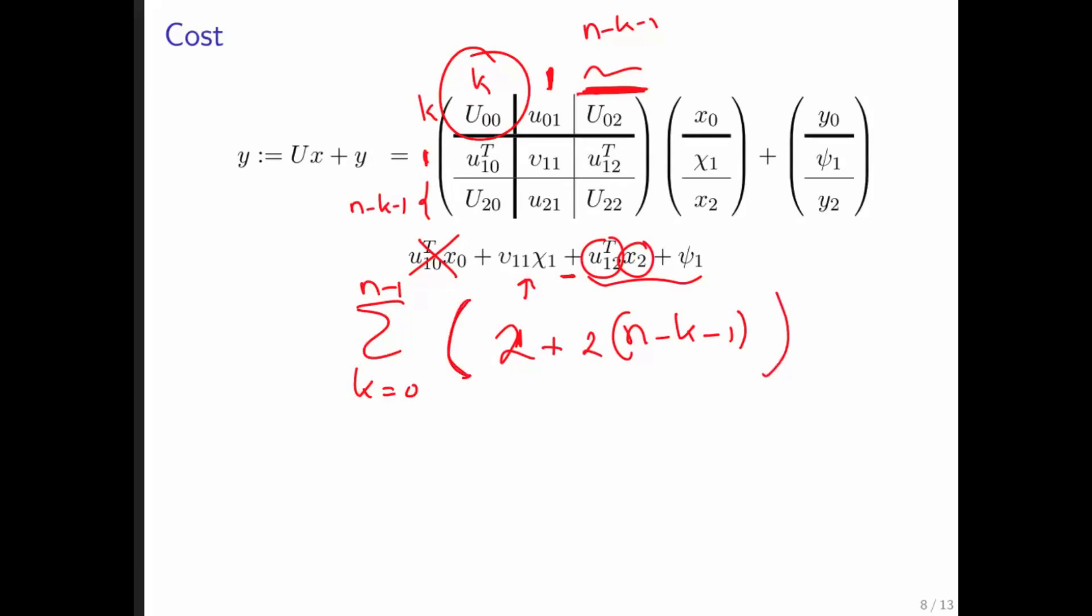We can also write this as the sum K equals 0 to N minus 1. Notice that we can have this offset that, so we get 2 times N minus K. Then we know we can bring this 2 outside. So we get 2 times the sum K equals 0 to N minus 1 of N minus K.